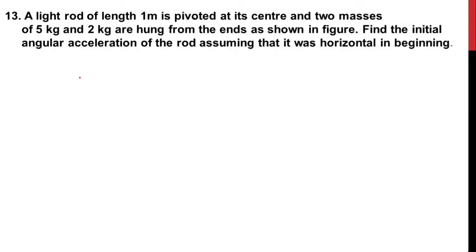Hello everyone. A light rod of length 1 meter is pivoted at its center, and two masses of 5 kg and 2 kg are hung from the ends as shown in the figure. Find the initial angular acceleration of the rod assuming that it was horizontal in the beginning.